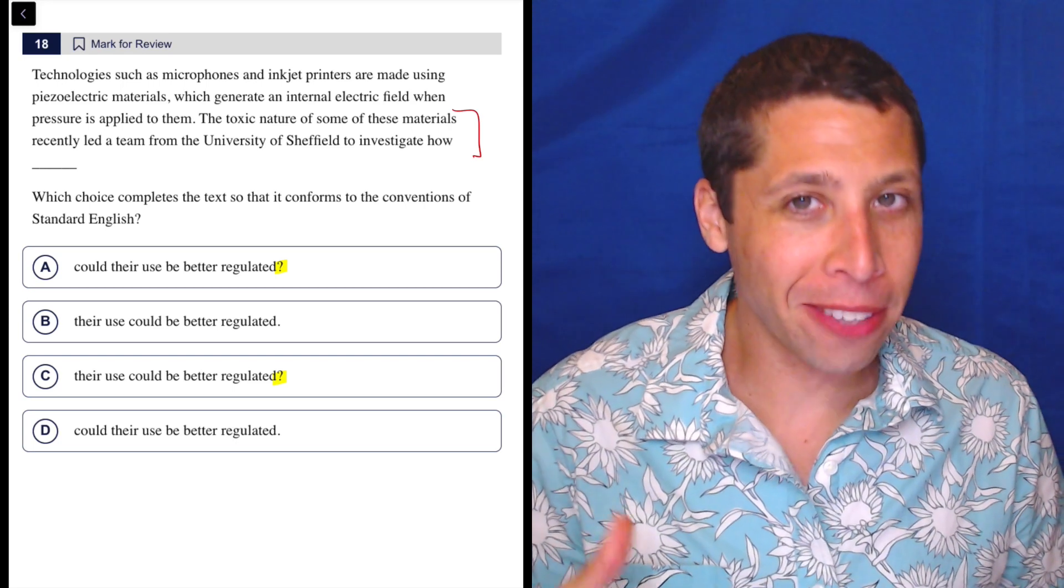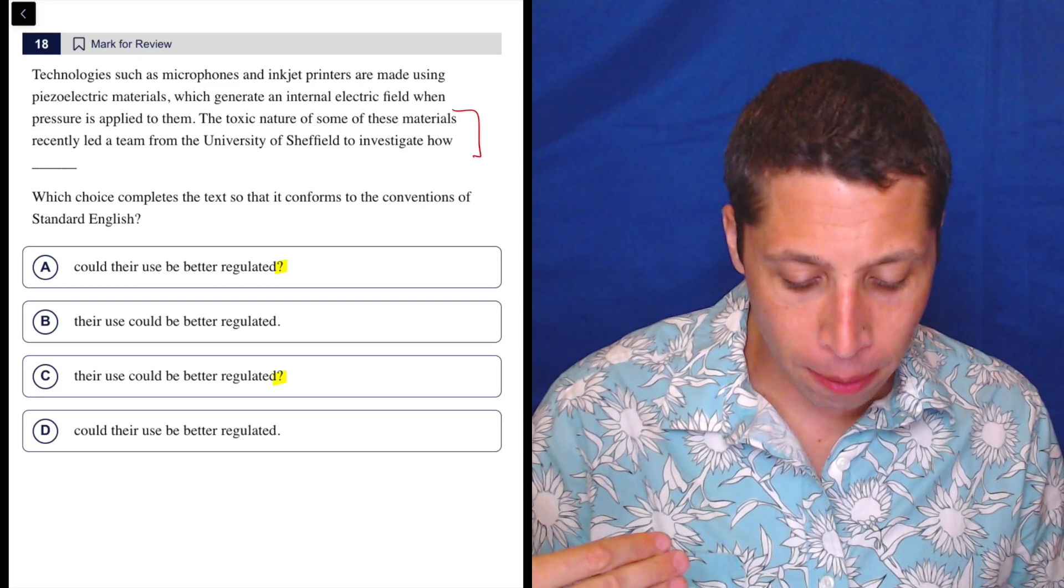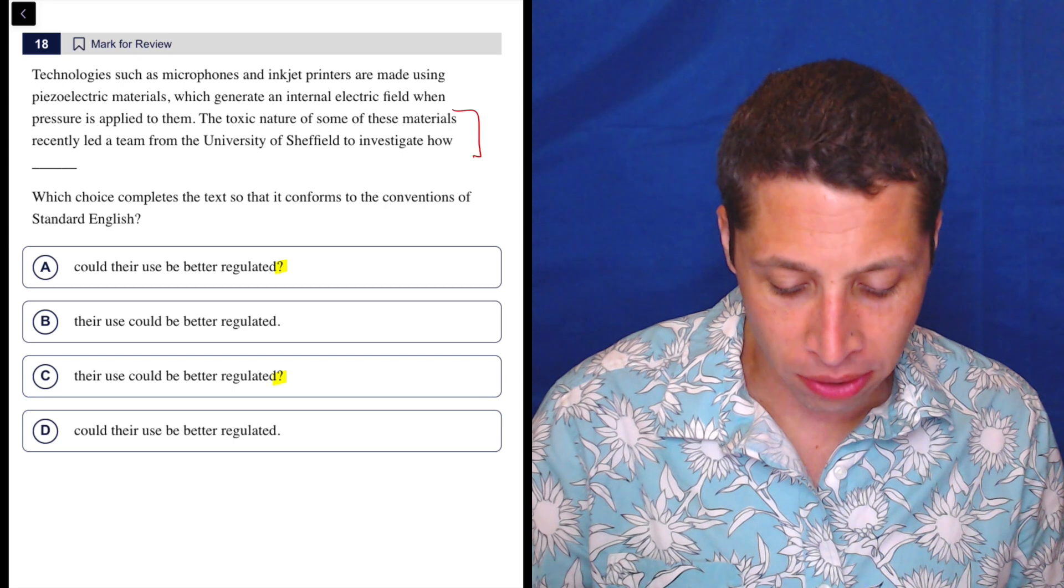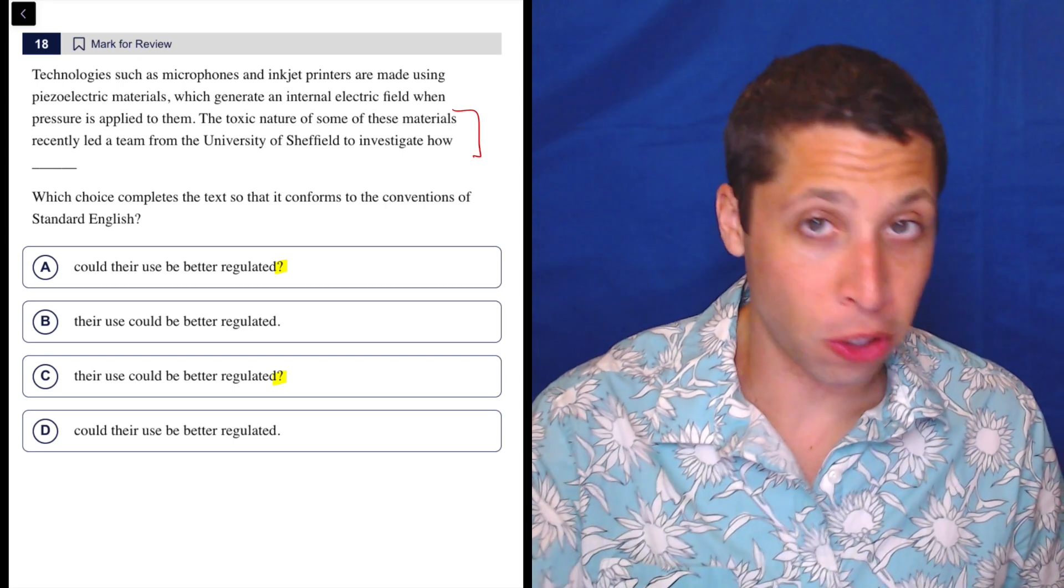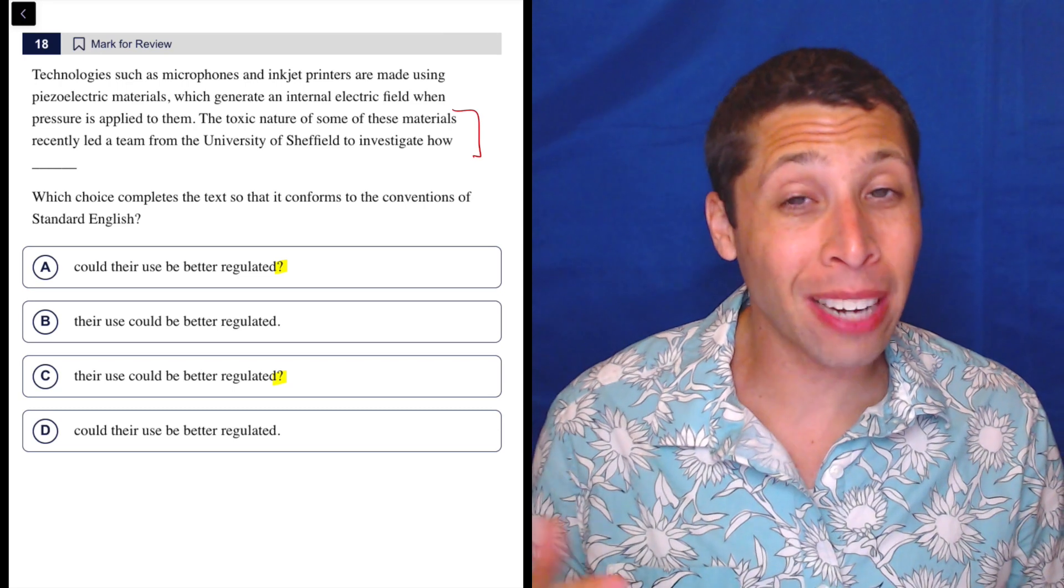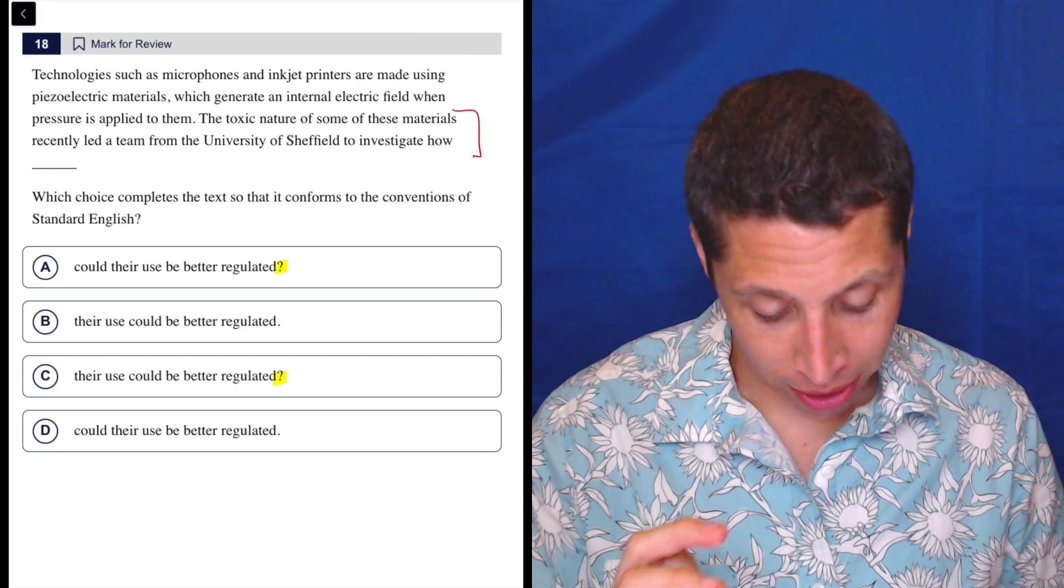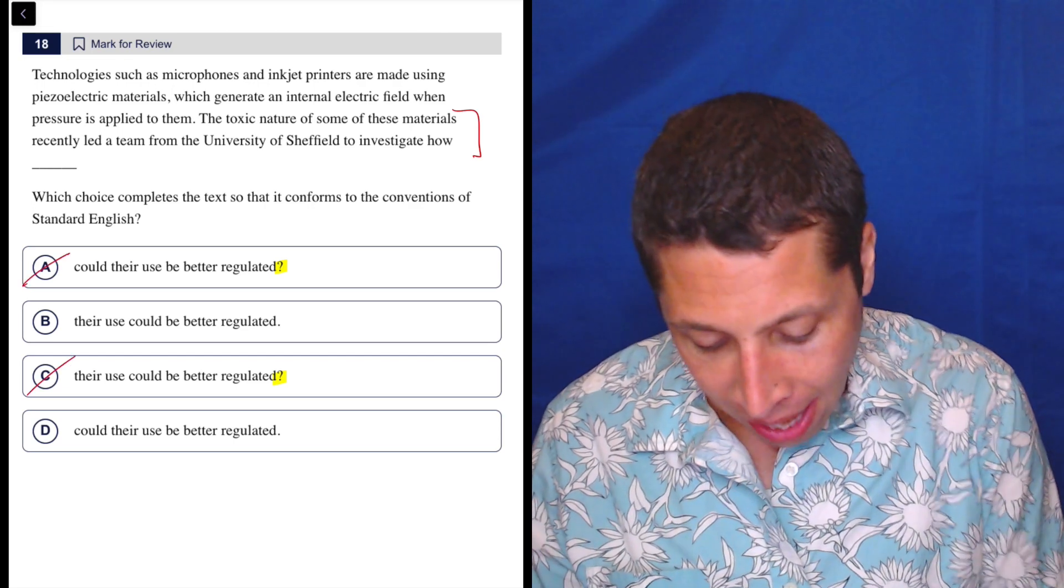But it doesn't sound like we're really asking a question. It's a statement about what the toxic nature of some of these materials led a team from the University to investigate. It's not a question, it's a statement about that. Then we're finishing the sentence with an extra clause that is what they investigated. So it's not a question. So it's not A and it's not C.